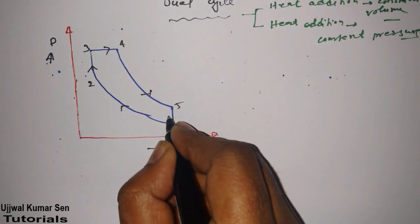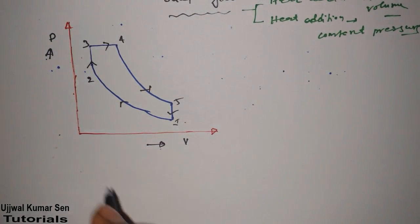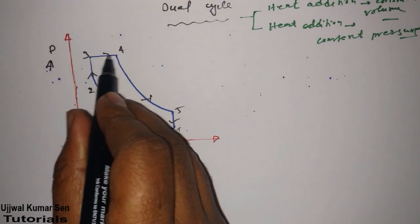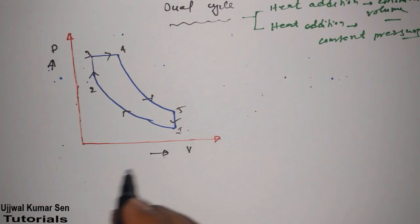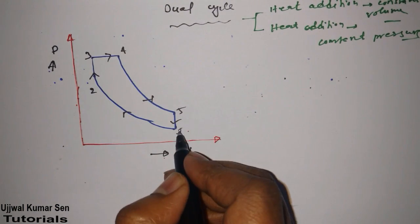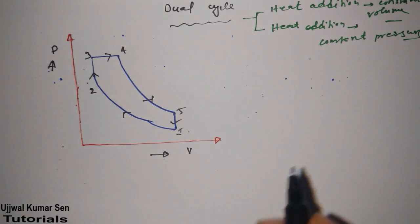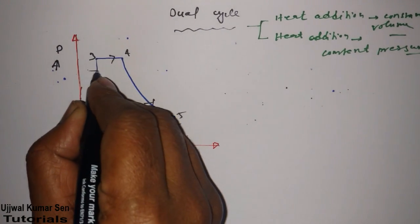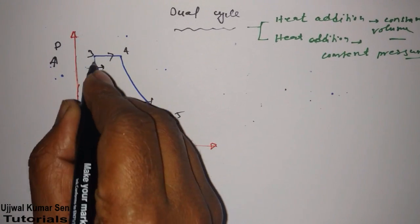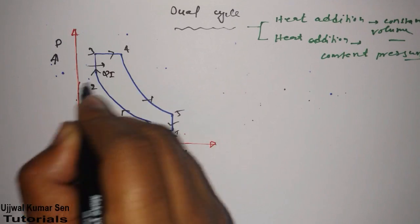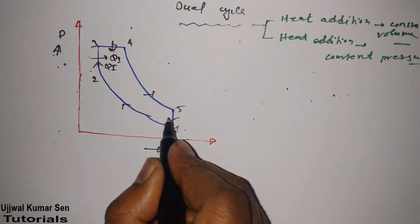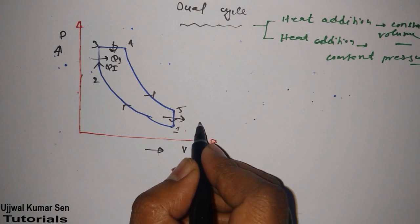From the diagram, process 2→3 is a constant volume process and process 3→4 is a constant pressure process. Process 5→1 is also a constant volume process. Heat addition takes place in this cycle two times: from 2 to 3 and from 3 to 4. Heat rejection takes place from 5 to 1.